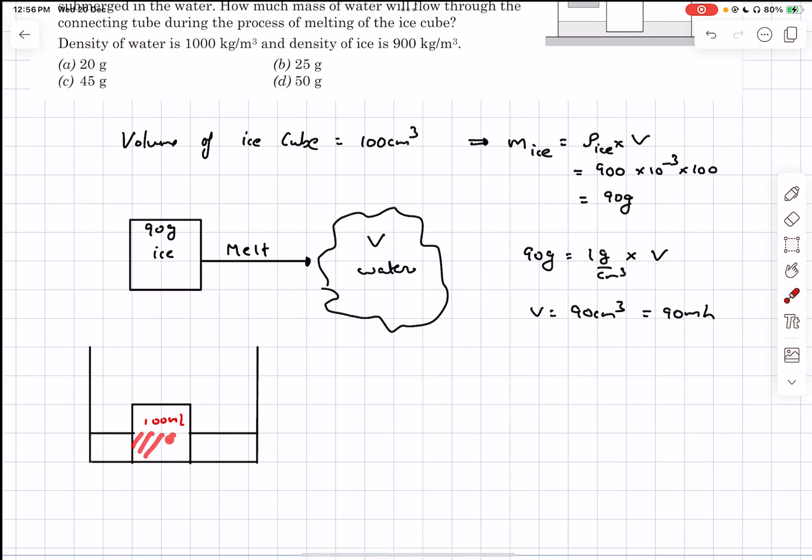So now let's say we melt the 90 grams of ice into water. The volume of water obtained is, let's say, V. How do we determine V? So basically we can conserve mass. So V is simply going to be 90 centimeter cube. So if we melt 90 grams of ice, we get 90 centimeter cube or 90 ml of water.